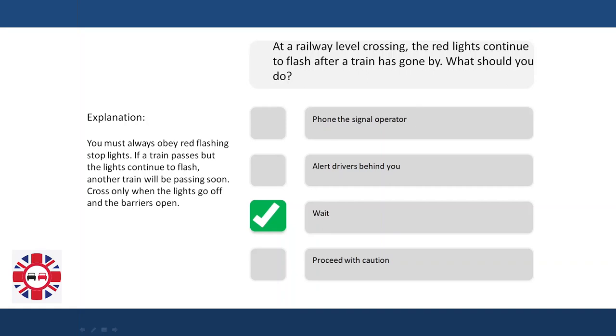Explanation: You must always obey red flashing stop lights. If a train passes but the lights continue to flash, another train will be passing soon. Cross only when the lights go off and the barriers open.